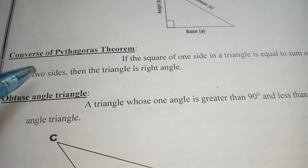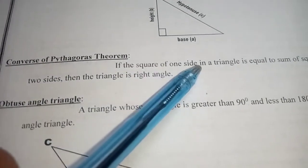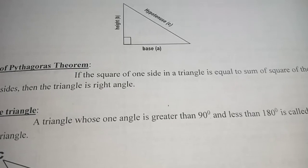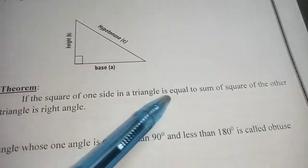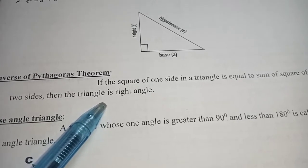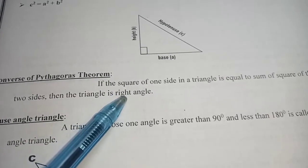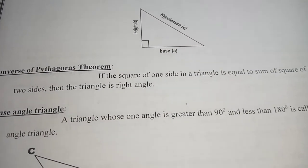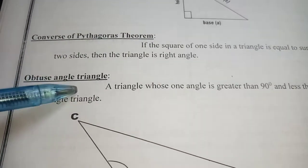Next, what is the converse of Pythagoras theorem? If the square of one side of a triangle — keep in mind we are not talking about any right triangle — is equal to the sum of the squares of the other two sides, then that triangle is called a right triangle. This statement is called the converse of Pythagoras theorem.